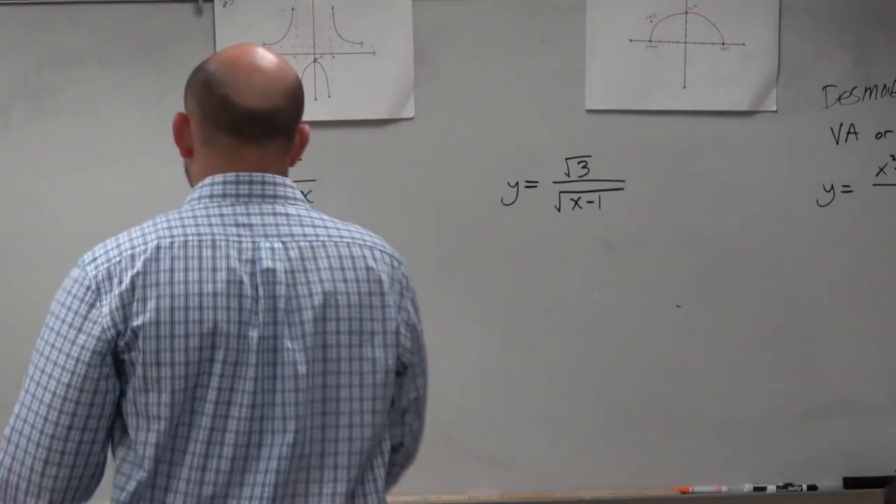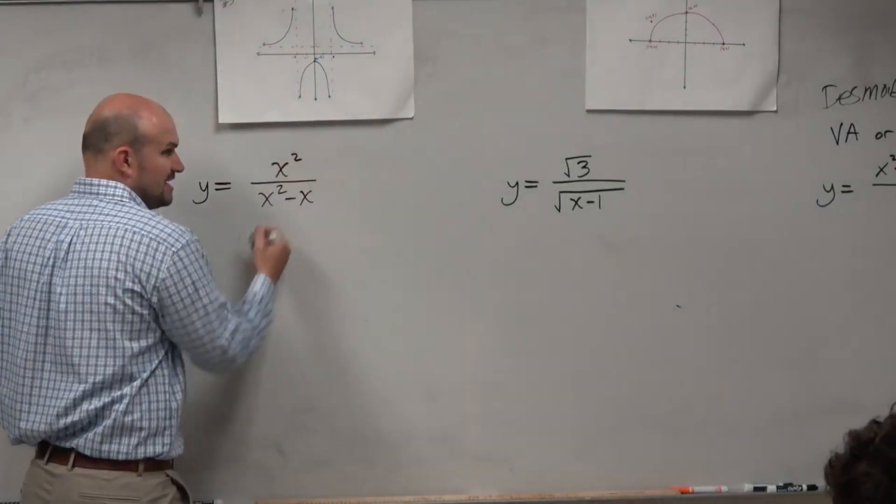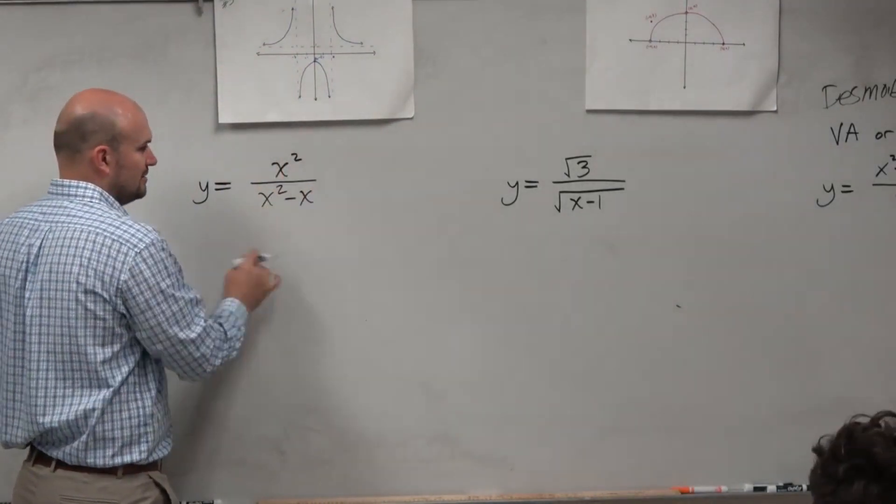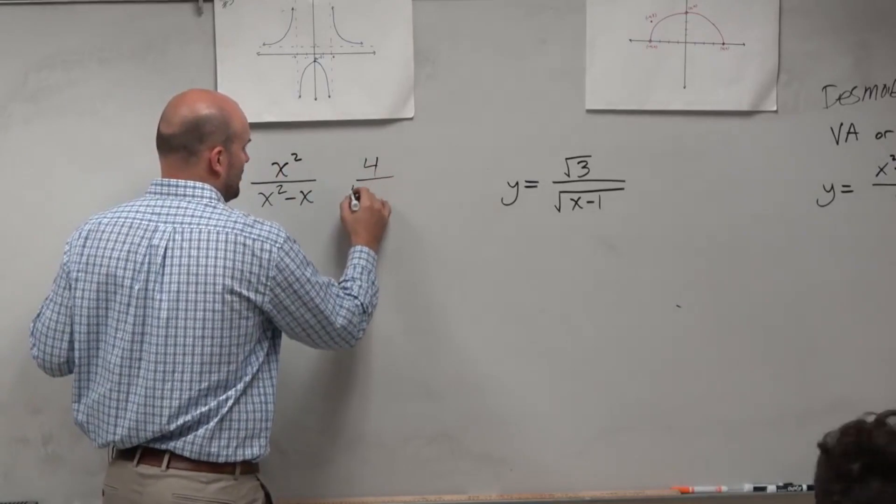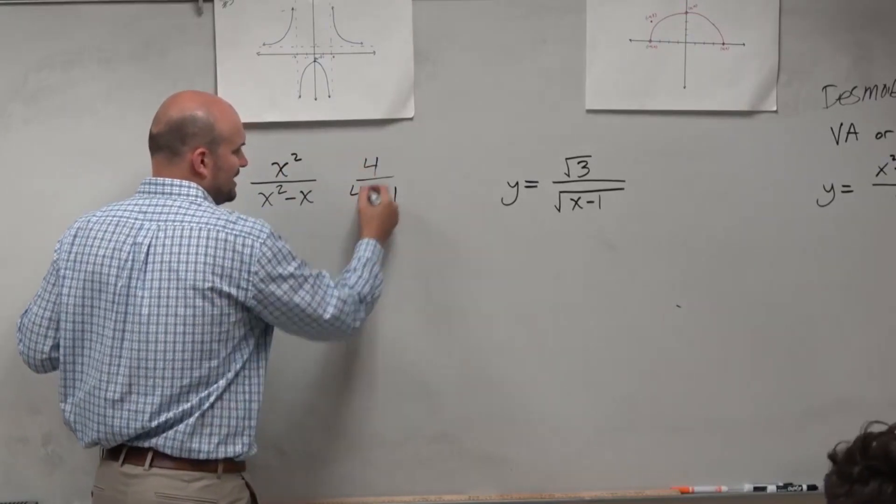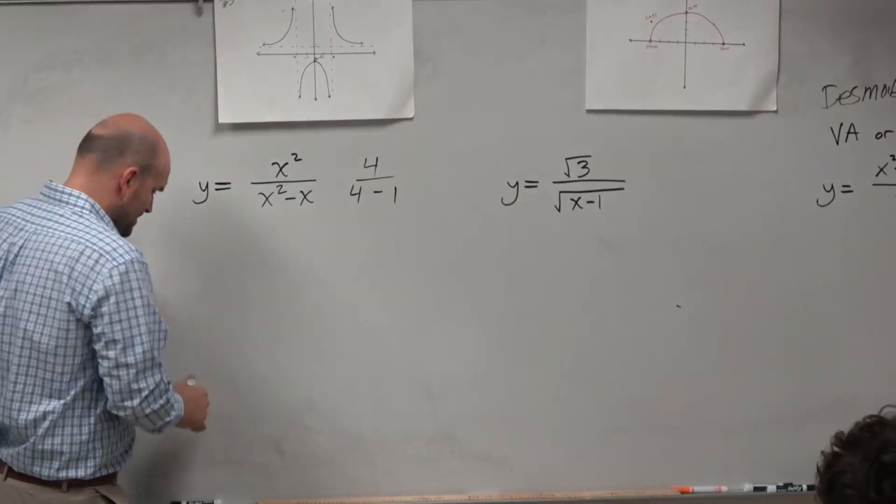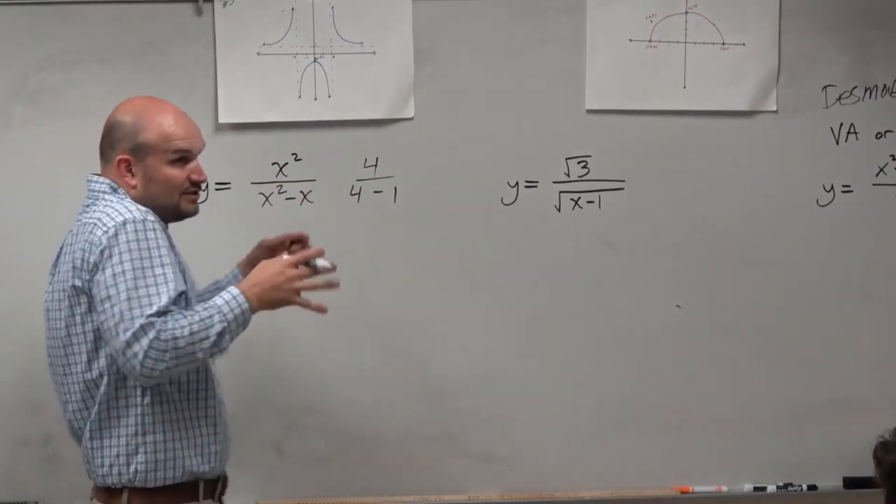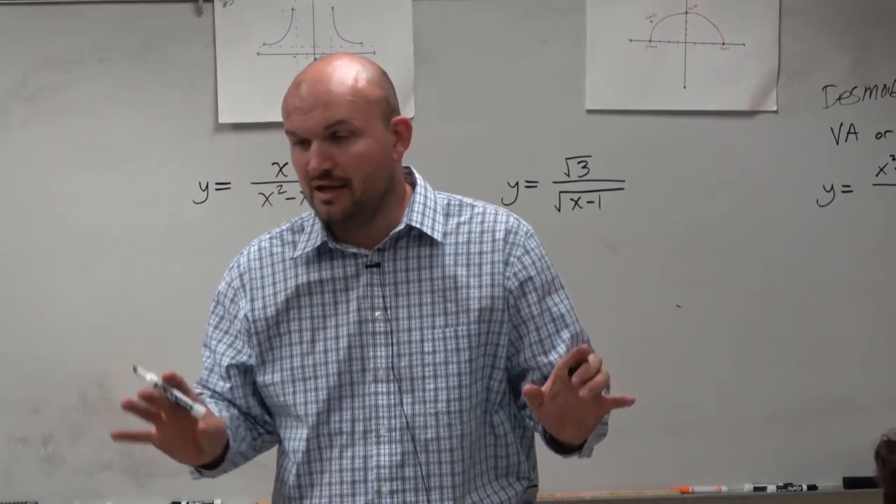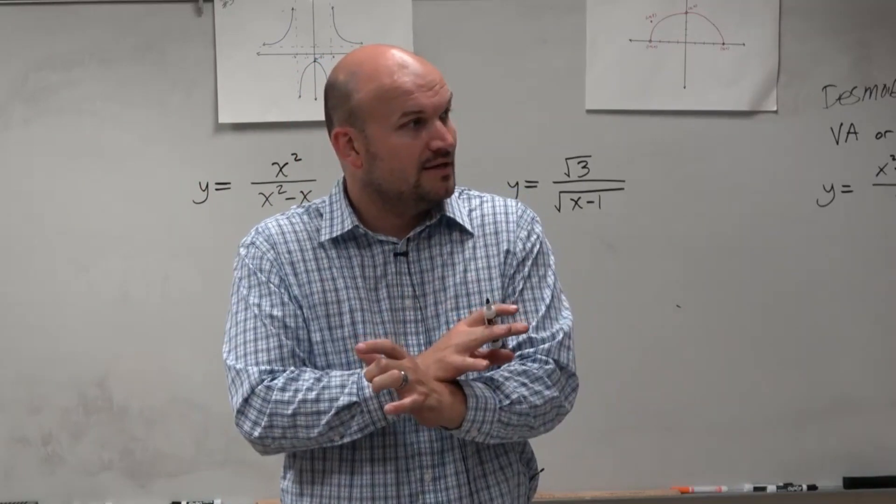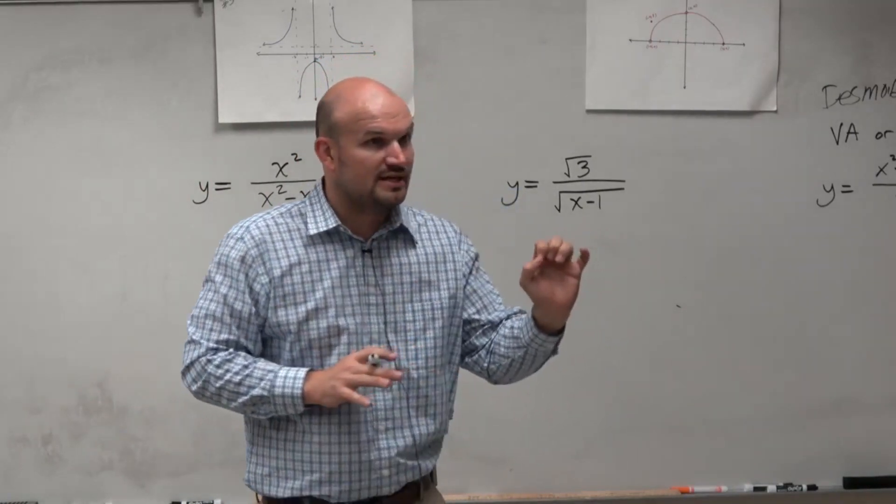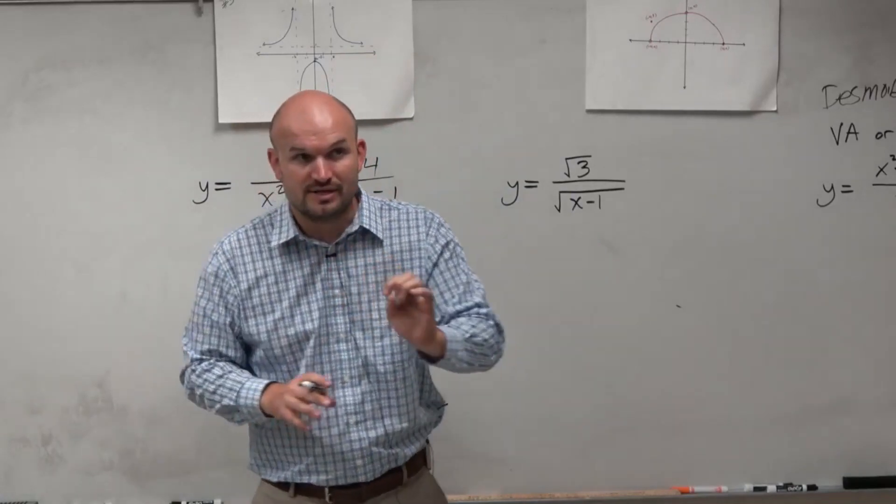Please don't do this. Don't say those divide out. No, don't do that. Does this make sense? 4 minus 4 minus 1. You can't just divide those out. That doesn't make any sense. So don't just divide that out. When you see a fraction, we talked about that. Rational functions are restricted when our denominator cannot equal zero.